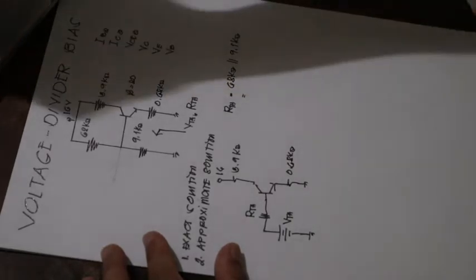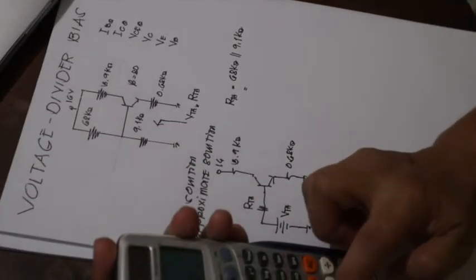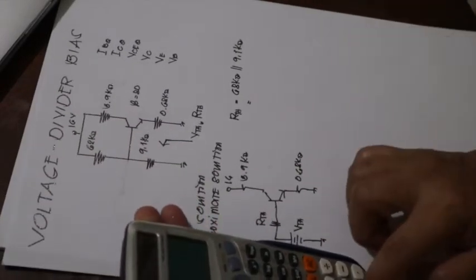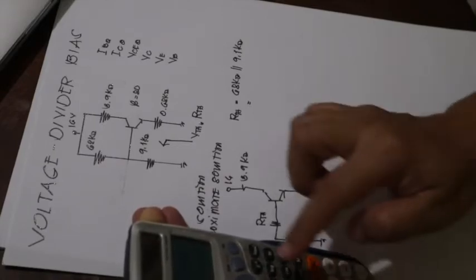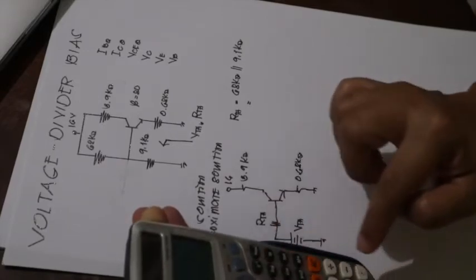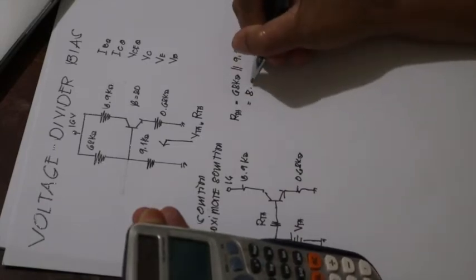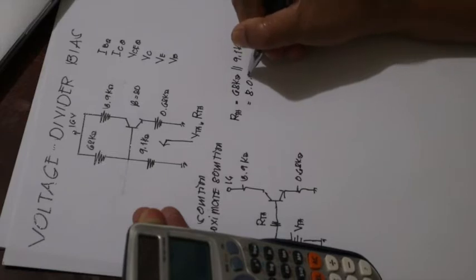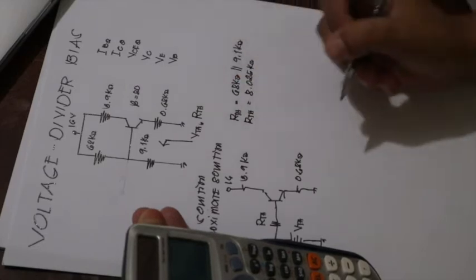How do we solve for the RTH here? RTH is simply the parallel combination of the 68 kilo-ohm R1 in parallel with your 9.1 kilo-ohm. So calculating this, we have 68 times 9.1 divided by 68 plus 9.1 kilo-ohm. We actually have 8.025 kilo-ohm as our RTH.